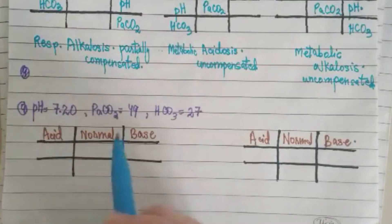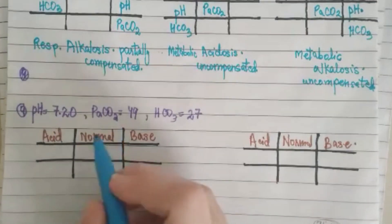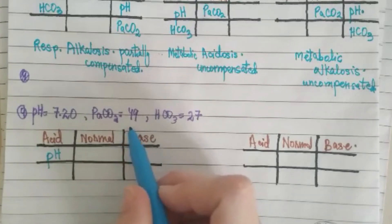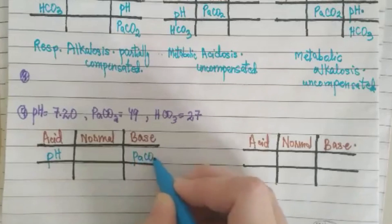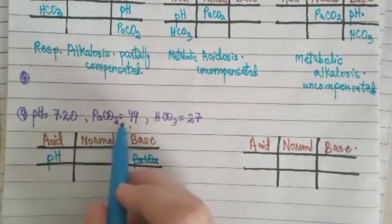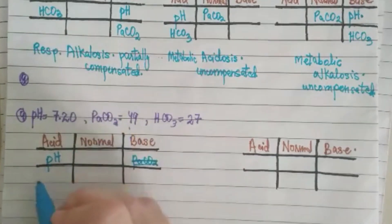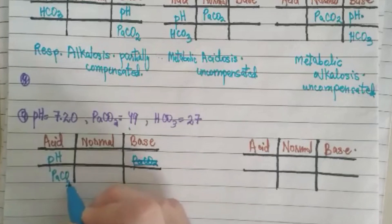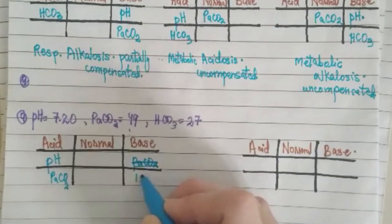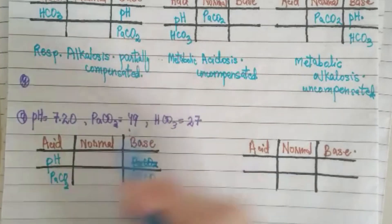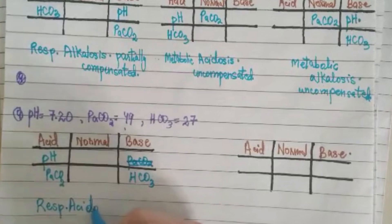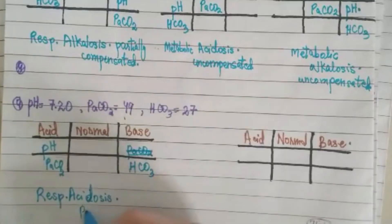In this exercise, pH is 7.20 — again acidic, so pH is on the acidic side. Partial pressure of carbon dioxide is 49, which is more than 45, so it is on the acidic side. Bicarbonate is 27, which is slightly more than 26, so it is on the base side. Because pCO2 is on the acidic side and HCO3 is on the base side, this indicates partial compensation — it is partially compensated respiratory acidosis.